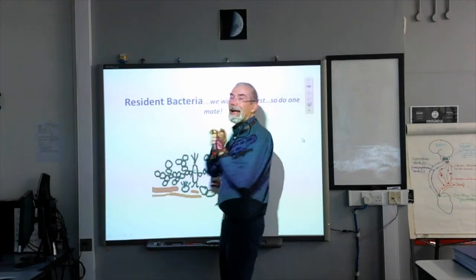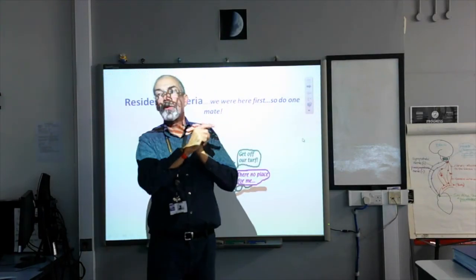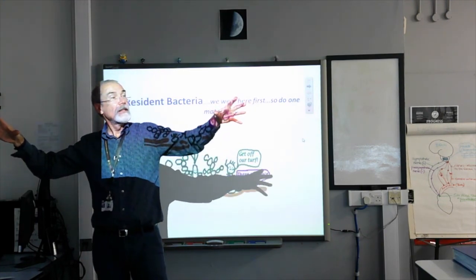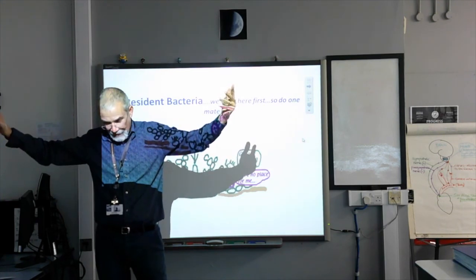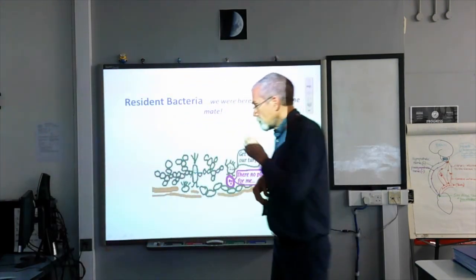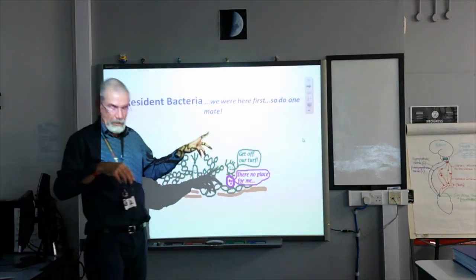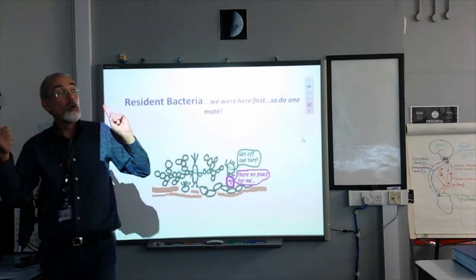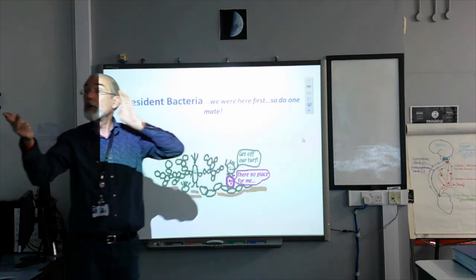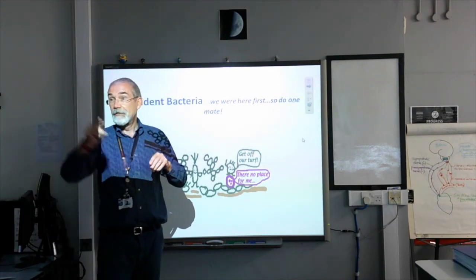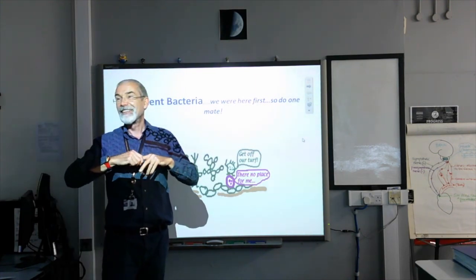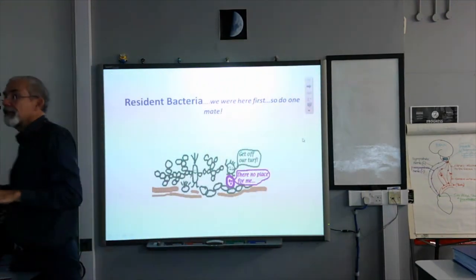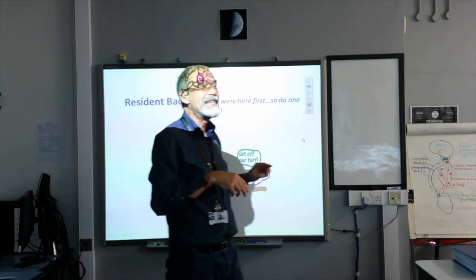We're still talking about body defences. Give me the definition of a pathogen. A pathogen is a microorganism that has the potential to cause a disease. A pathogen can get into the body through four different routes. Now we're going to talk about bacteria that are not necessarily going to cause you harm — they are called resident bacteria.